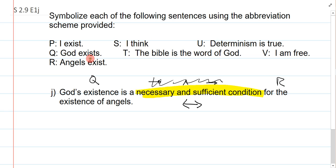is a necessary and sufficient condition for the existence of angels. Angels exist, R. Now, remember, always be a bit generous with the abbreviation scheme. Sometimes it doesn't match up perfectly, but you just need to use some common sense to make it work. This symbolizes as Q biconditional R. OK.